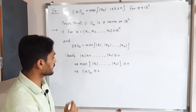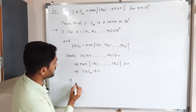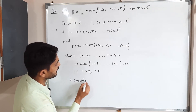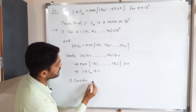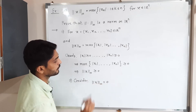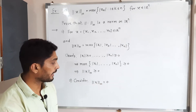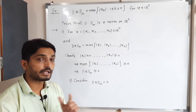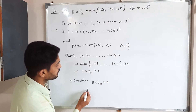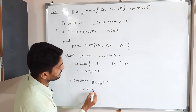For the second property, we consider ‖x‖∞ = 0 and we have to prove that x = 0, and if and only if.